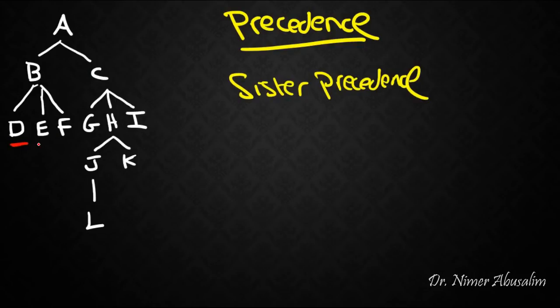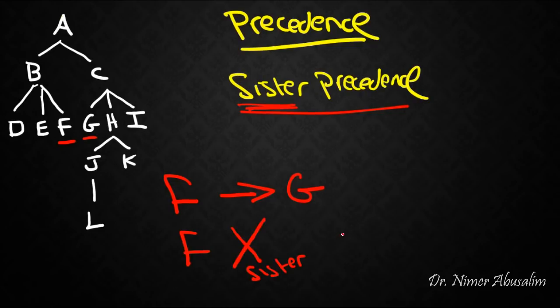Great. So D precedes E, E precedes F. Also E sister precedes F. D sister precedes E and F. But none of these sister precede G because they're not sisters in the first place. So F precedes G, but F does not sister precede G because they're not sisters. They are of different mothers.